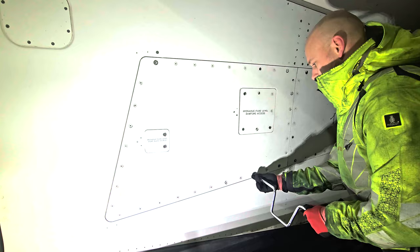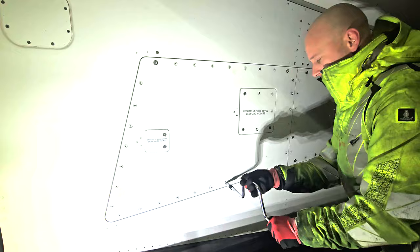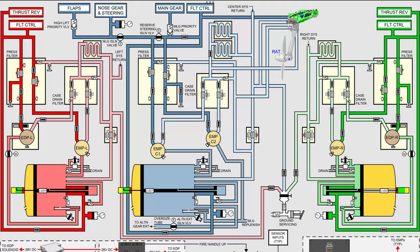Before we remove the access panels to replace the return filter, let me tell you something about the main hydraulic system on the 787. The 787 has three independent hydraulic systems: left, center, and right.